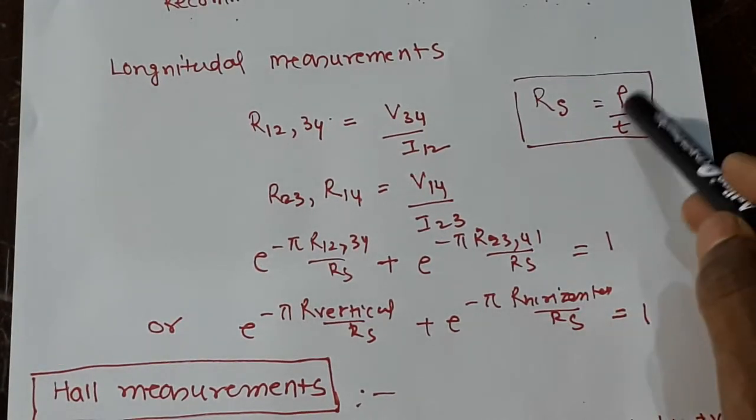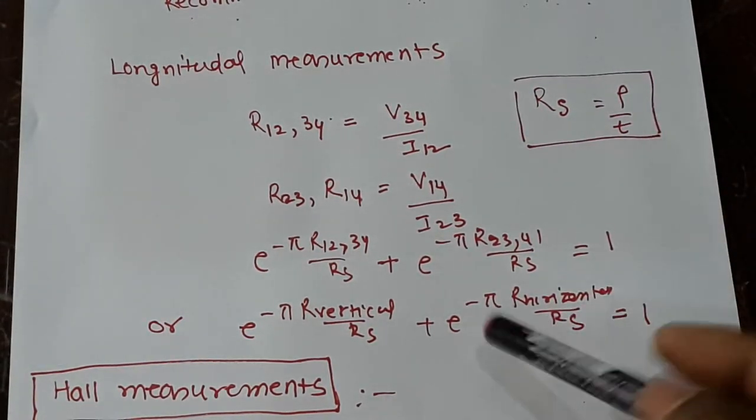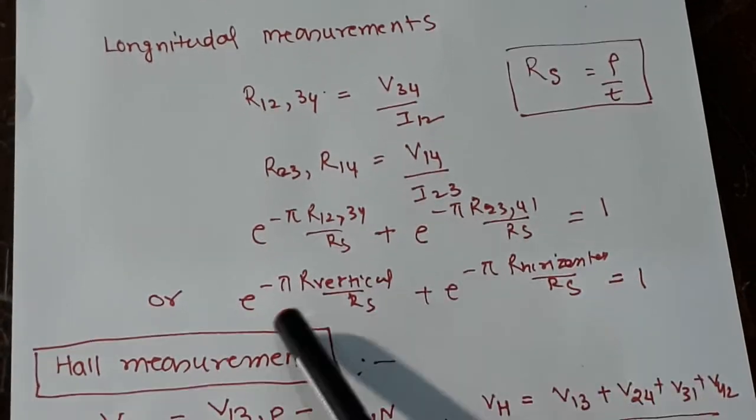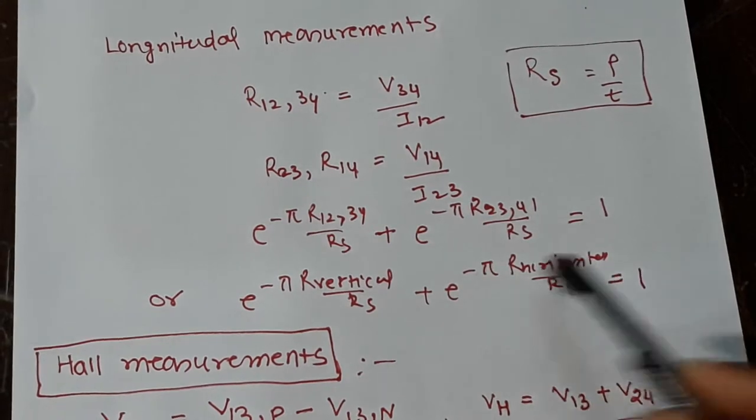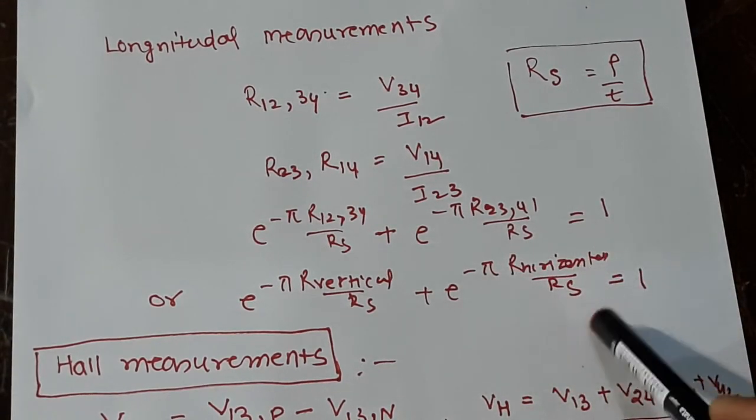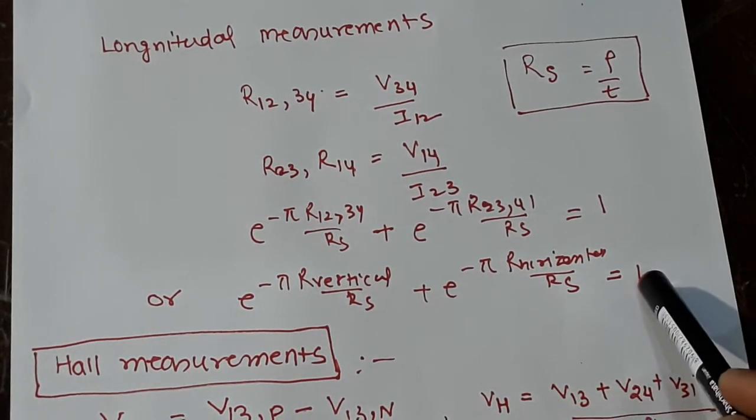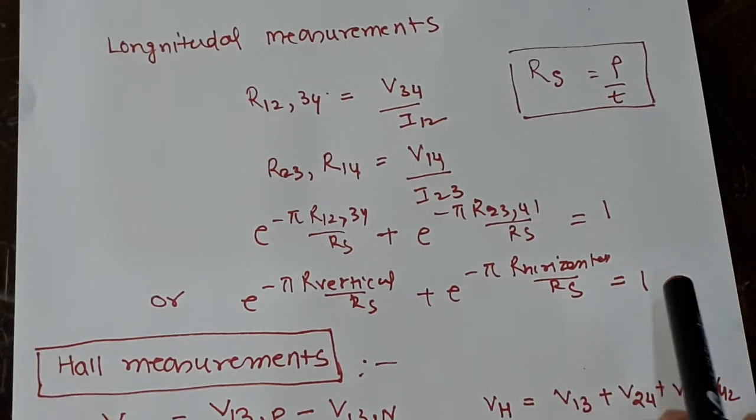To get the sheet resistance - sheet resistance is rho (resistivity) divided by thickness - what you need to do is: e^(-π R_vertical/Rs) + e^(-π R_horizontal/Rs) = 1. You solve this transcendental equation to get Rs.